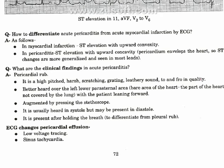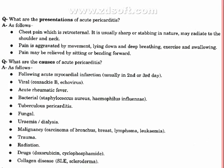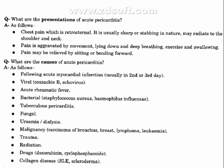The rub is usually heard in systole but may also be present in diastole. It persists after holding the breath, to differentiate it from a pleural rub. ECG changes may include pericardial effusion findings such as low voltage tracing and sinus tachycardia.